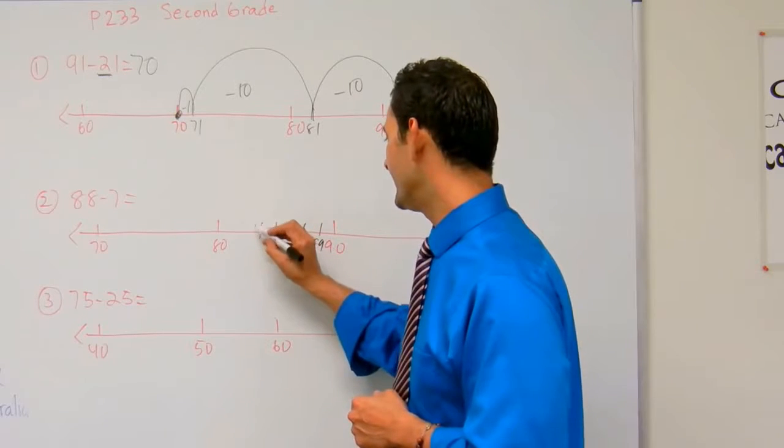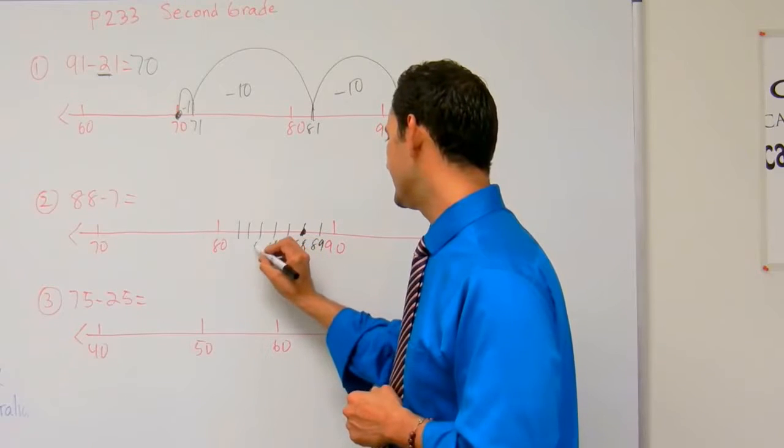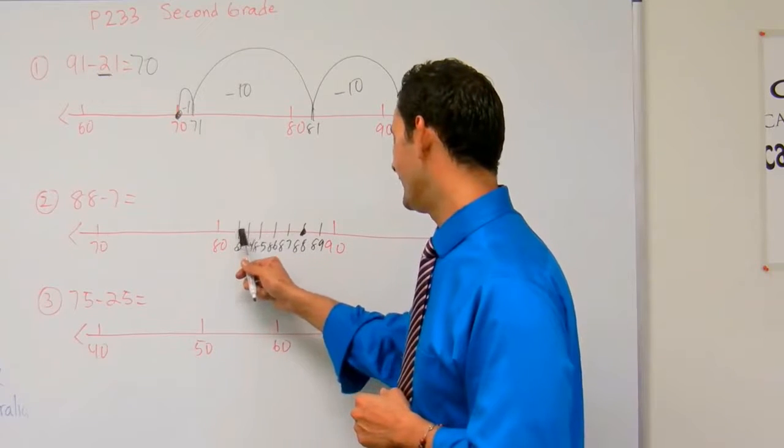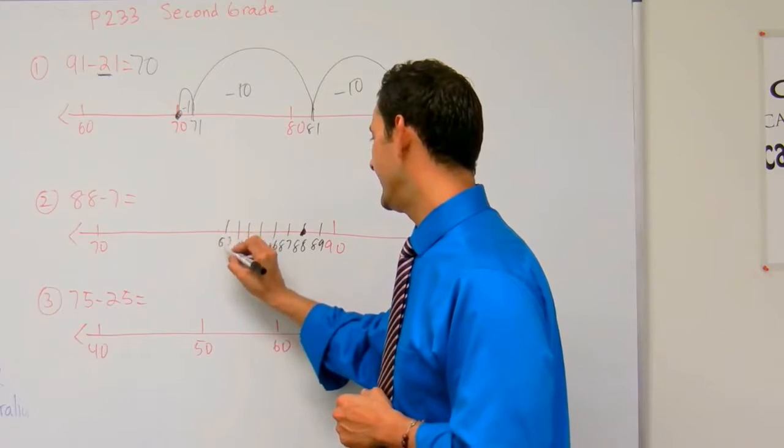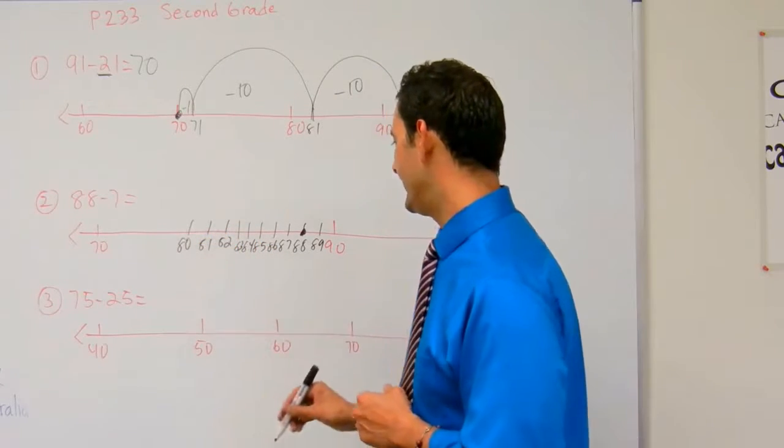1, 2, 3, 4, 5... 87, 86, 85, 84, 83, 82, 81, and that's 80 right there.